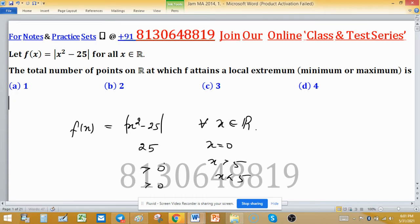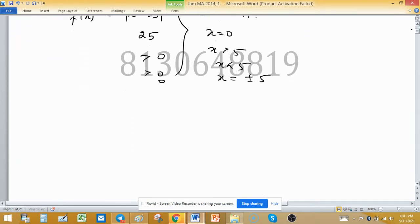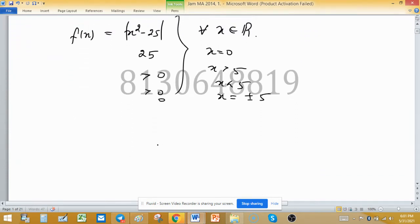And in between, because this is mod, always positive, but at 0 this is 25 and at 5, at plus minus 5, value is 0. So we have some idea about the structure of the graph.